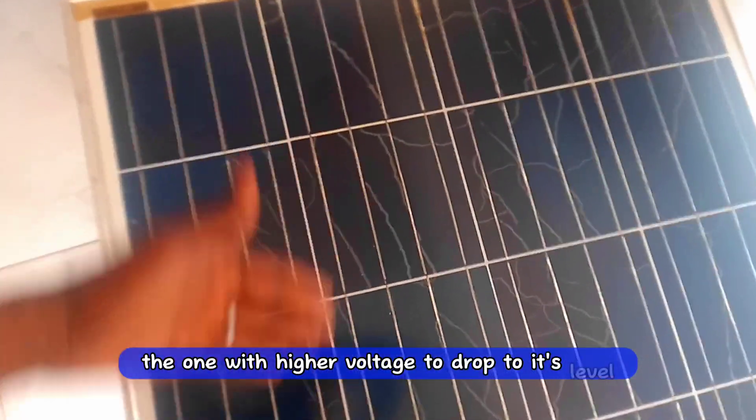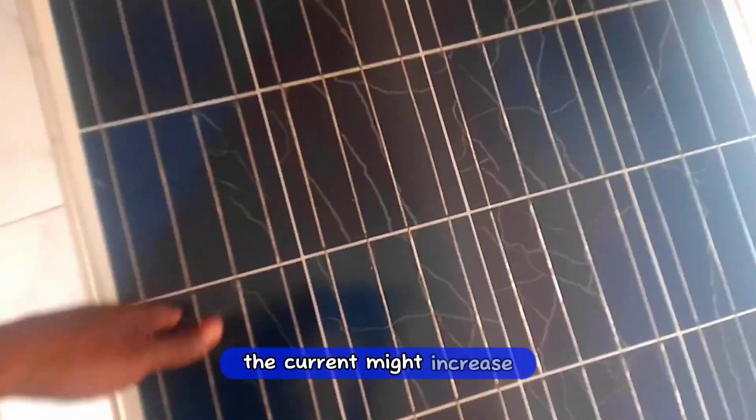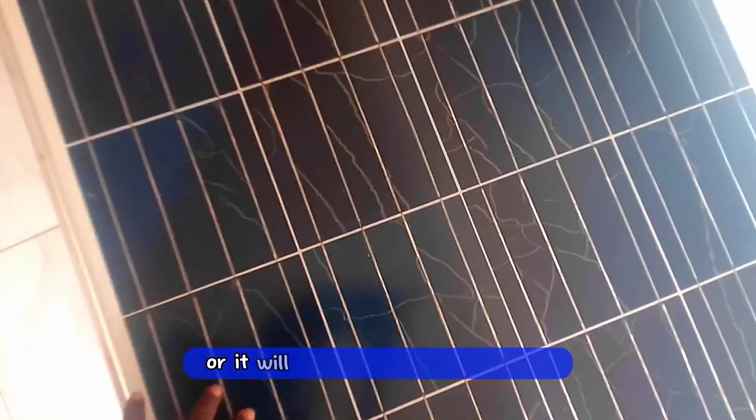the one with lower voltage will cause the one with higher voltage to drop to its level. And if it's in parallel, the current might increase, if it's in series, the current will remain the same, so it will cause this burn or something like this.